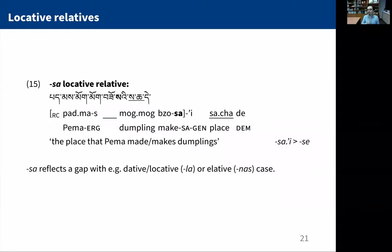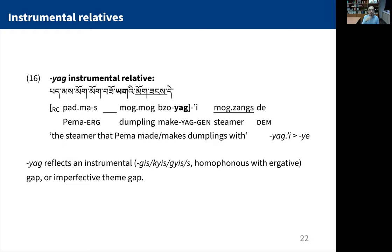Here's a locative relative: peme momo se chatte — 'the place that Pema made or makes momos.' Sa replaces the auxiliaries on the verb and we get the genitive marker; sa and the genitive together get this ablaut, becoming se. Here's an instrumental relative — we get ya morphology instead. Ya is the marker when you relativize over an instrumental gap, i.e., an argument bearing the instrumental case, or over imperfective themes.